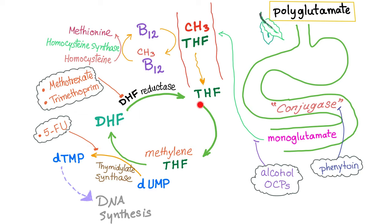Now for the tetrahydrofolate story: tetrahydrofolate is converted into methylene tetrahydrofolate. This methylene tetrahydrofolate is then converted into dihydrofolate. At the same step, dUMP is converted into dTMP, which is part of DNA. This thymidylate synthase step is inhibited by the drug 5-fluorouracil. The dihydrofolate can then be converted back to tetrahydrofolate to complete the cycle by the enzyme dihydrofolate reductase.